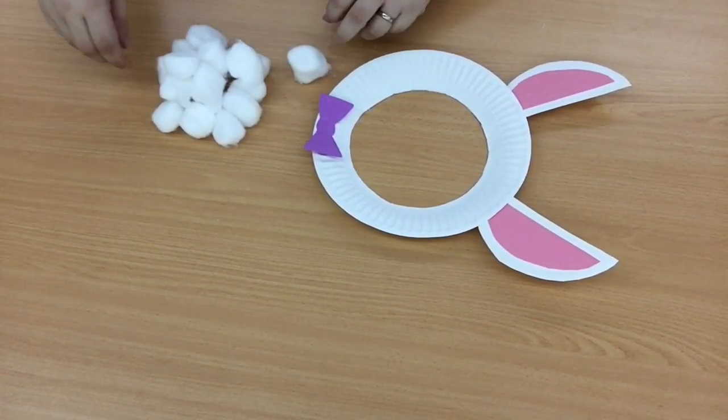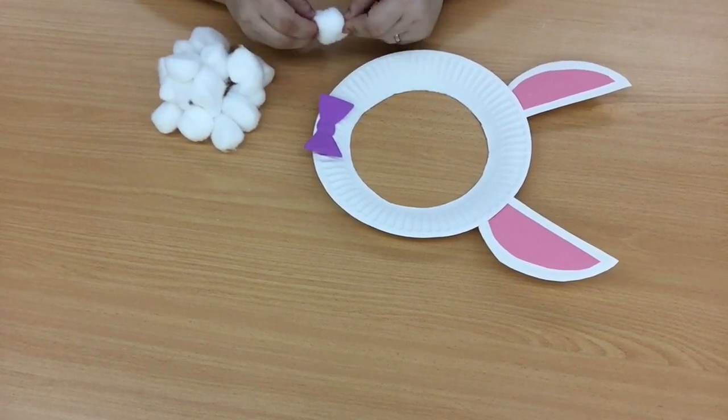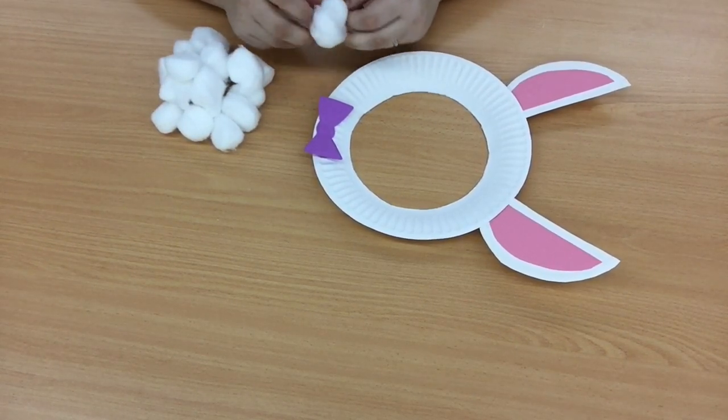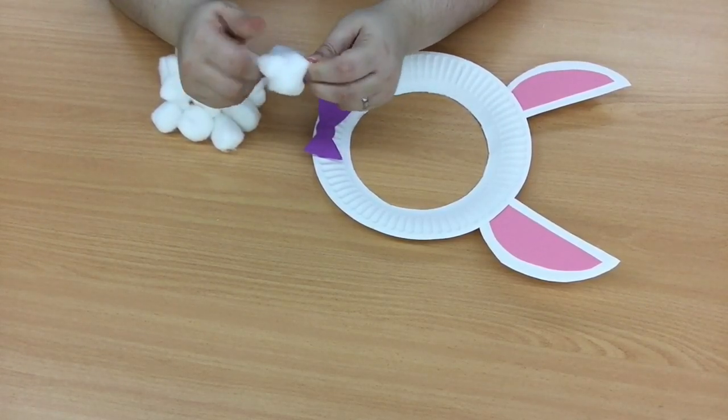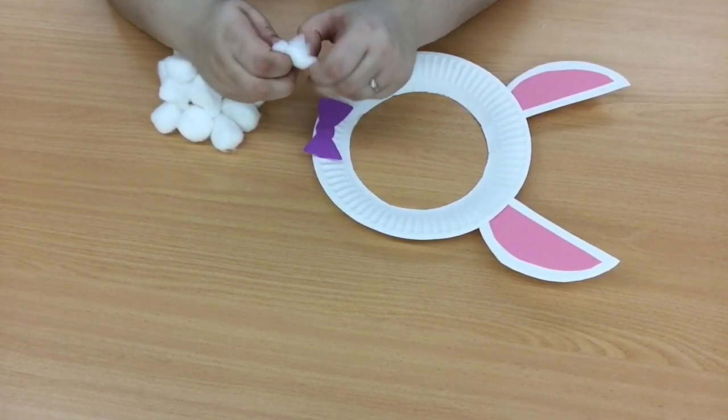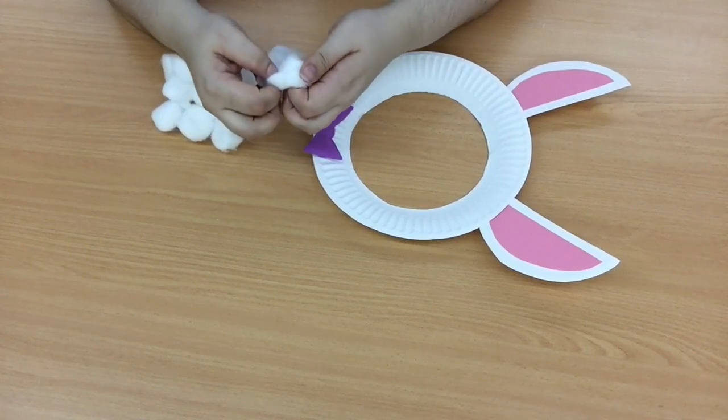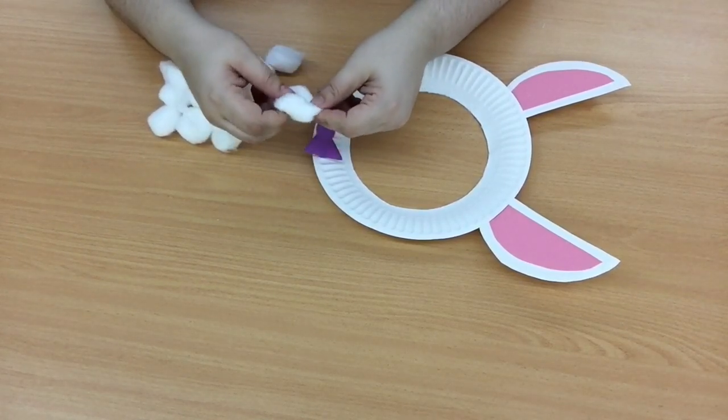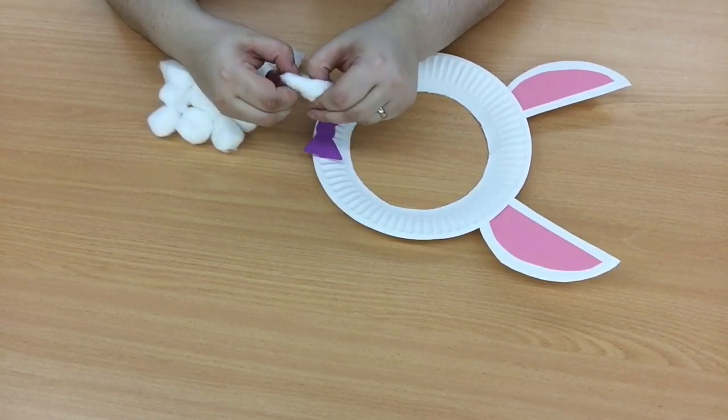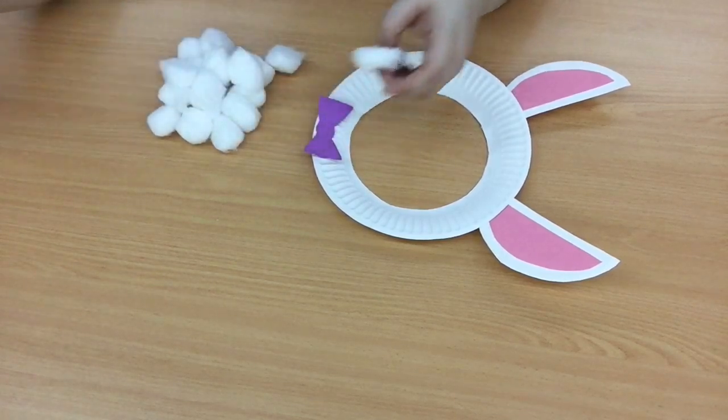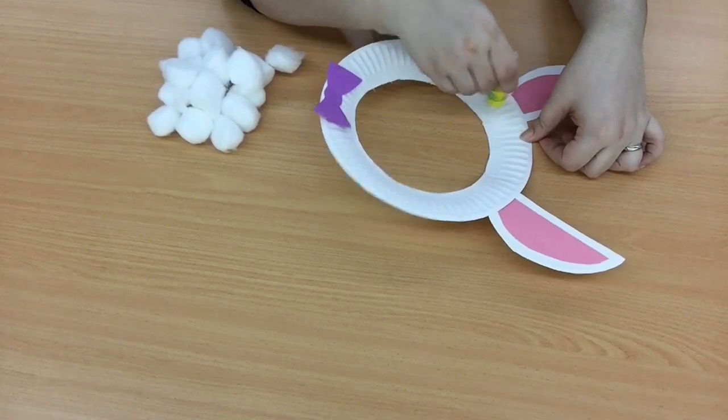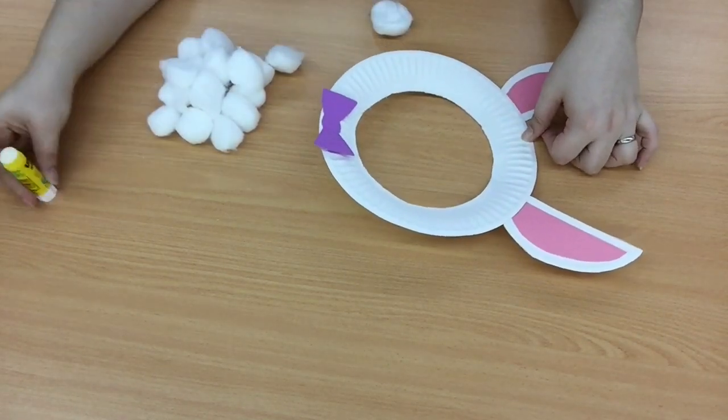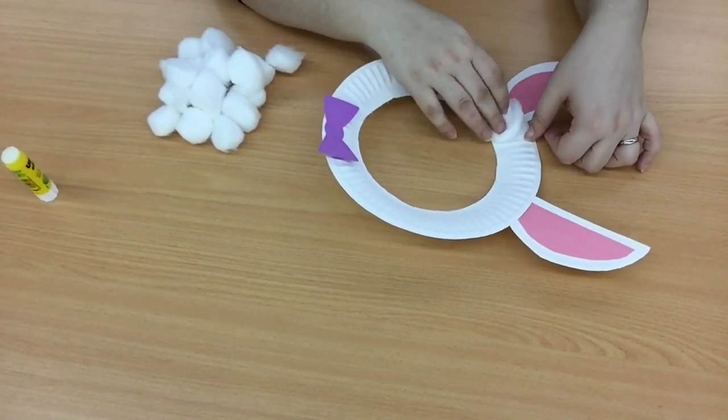I think what will make this bunny frame even better is making it fluffy. So now get your cotton balls and pull them apart a little bit. We want to make them nice and big and fluffy. So you get to have a bit of fun with this. Really pull them apart and make them fluffy. And once it's nice and big and fluffy enough, get your glue stick. Give a little bit of a swirl and place your cotton ball on there.